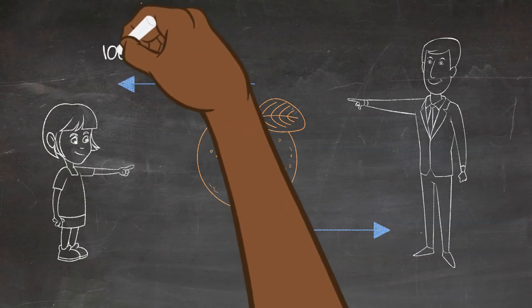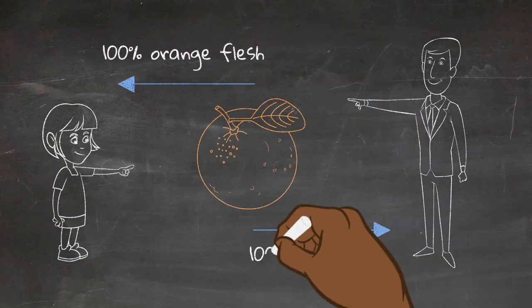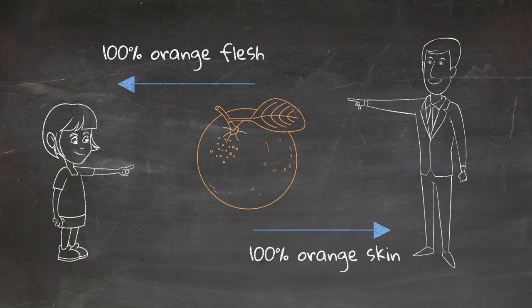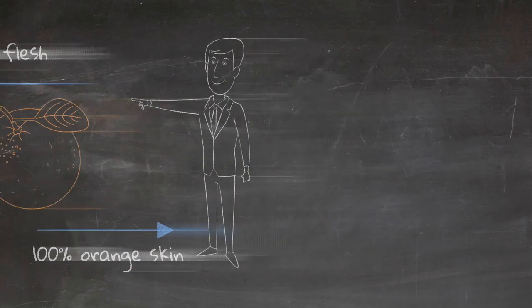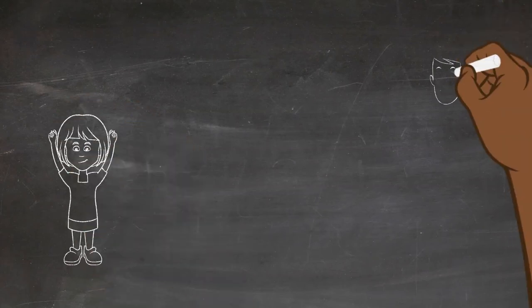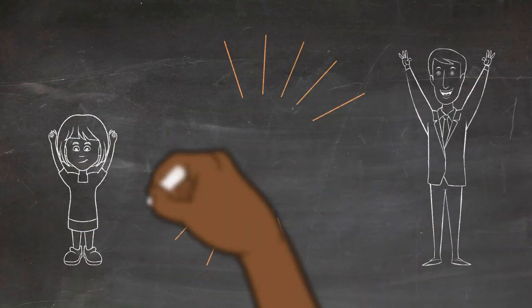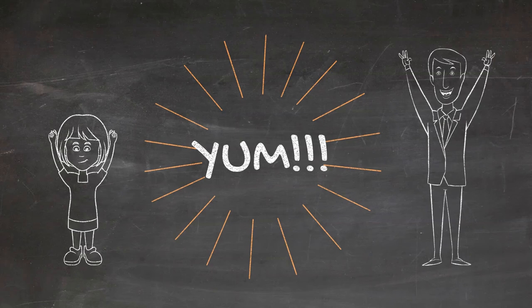But instead of walking away with 50% of the flesh, you can walk away with 100% of it and make a much larger glass of orange juice. Similarly, your negotiation partner can get all of the skin and rind of the orange, not just half of it, and make many more orange muffins.